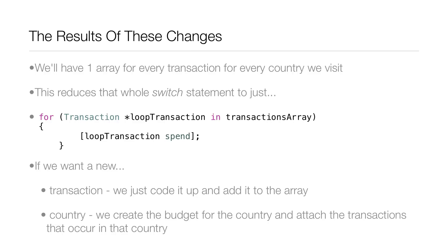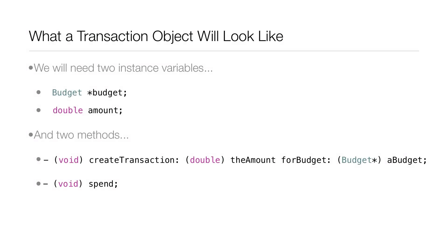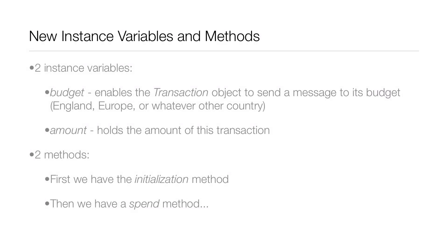If we want a new transaction we just code it up and add it to the array, and if we want a new country we just create the budget for that country and attach the transactions that occur there. The cash transaction works with the spend dollars method and the credit card transaction works with the charge foreign currency method. A transaction object will need two instance variables: a budget object from the Budget class, and a double called amount.